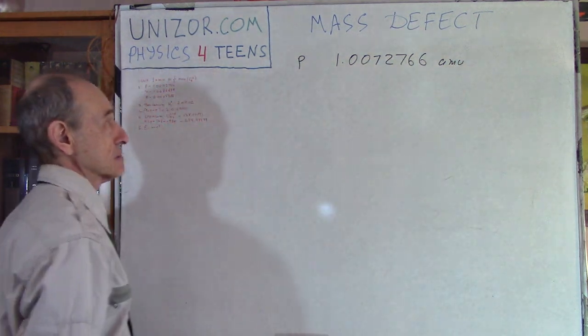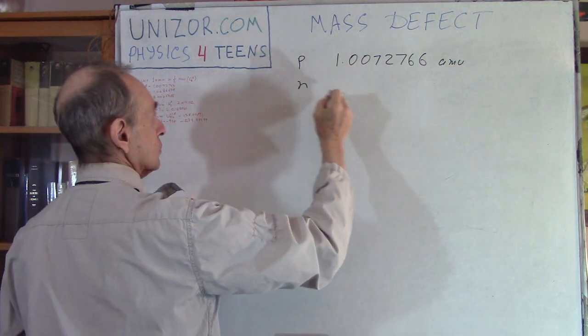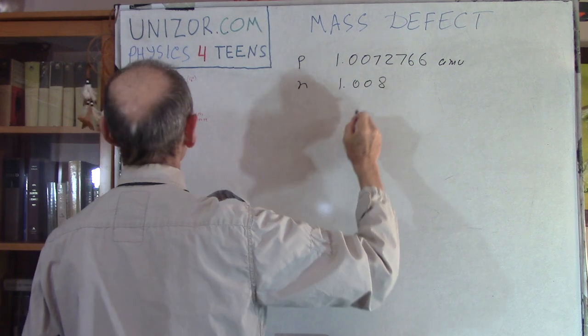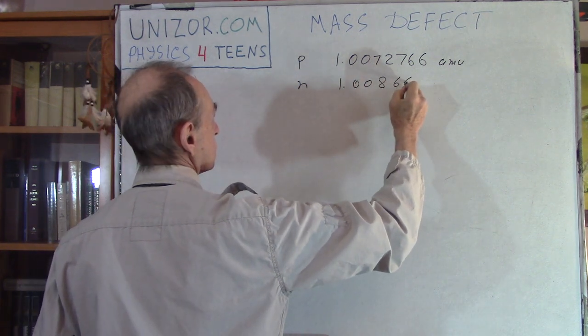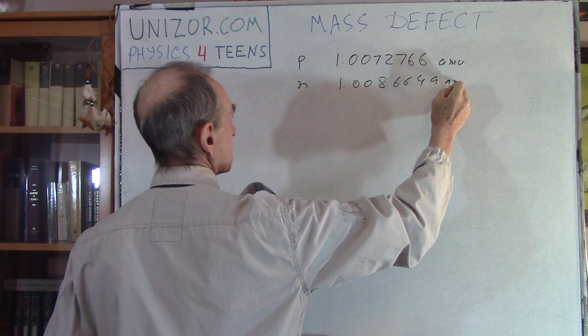1.007276 AMU. That's the mass of the proton.